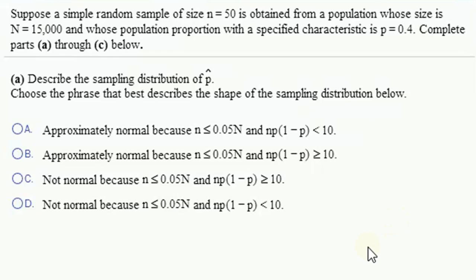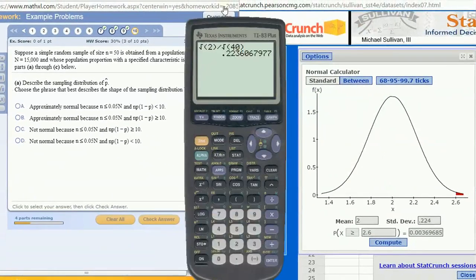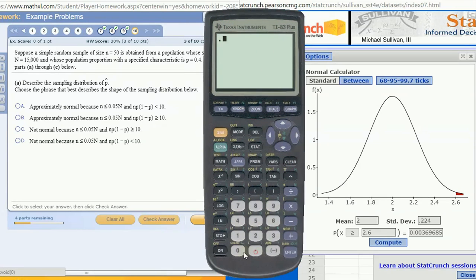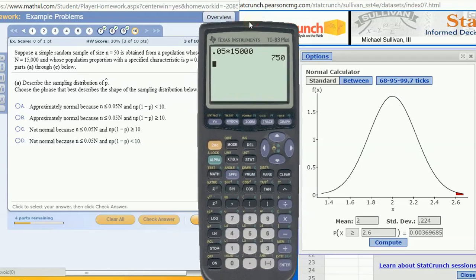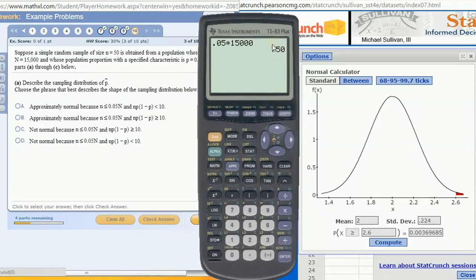So our sample proportion should be approximately normal, and the reason that is the case is we can check two things. Let's bring up our calculator. We want to check first is 0.05 times the population size, 15,000. If our sample size was bigger than this, that would be a little bit too large to guarantee normality or approximate normality. And if your sample size is too big, then your sampling stops being independent. Your sample observations stop being independent of each other.